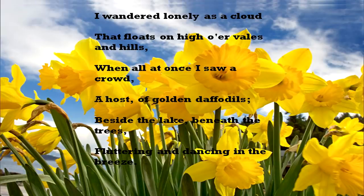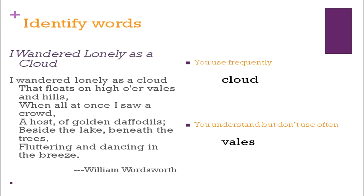Now let us look at this poem: 'I wandered lonely as a cloud that floats on high over vales and hills. When all at once I saw a crowd, a host of golden daffodils. Beside the lake, beneath the trees, fluttering and dancing in the breeze.' When reading a text — a poem, prose, story, or newspaper article — you come across words that are familiar and words that are not. Frequently used words here include 'cloud' because we talk about clouds every day. We rarely talk about 'vales' and 'valleys' because we don't live in such surroundings.